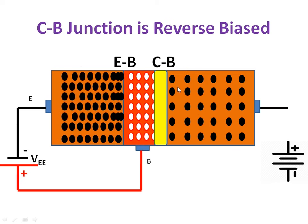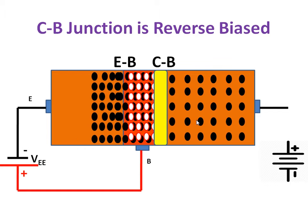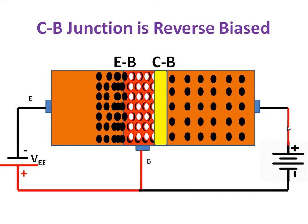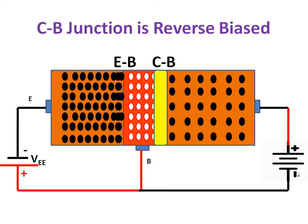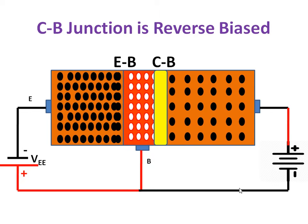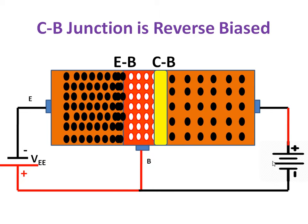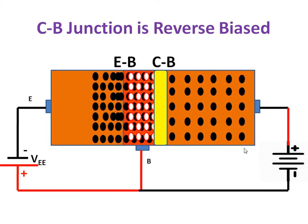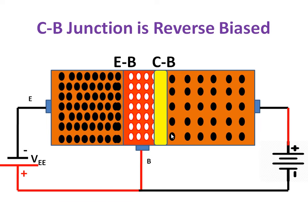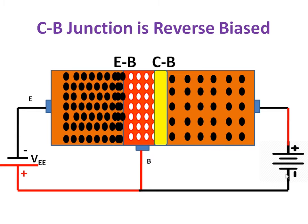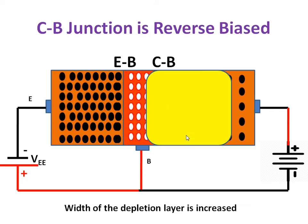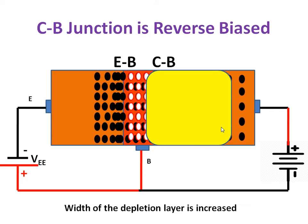The collector-base junction is reverse biased — the n-type material is connected to positive and the p-type base is connected to negative. During reverse bias, the width of the depletion layer increases. The initial depletion layer width in the collector-base region becomes larger due to the large reverse voltage applied.